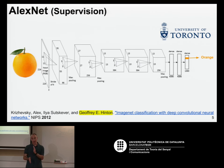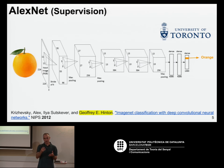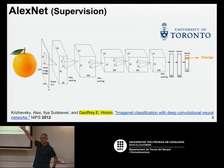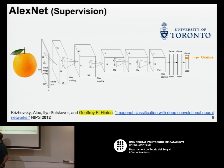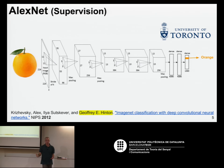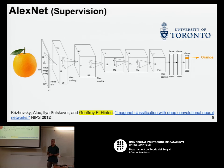In those layers, you have the types of layers that Elisa explained — convolutions, max pooling, and regularizations. This model, apart from being called Supervision, is properly known as AlexNet. The first author is Alex Krizhevsky, who was in Toronto at that time together with Geoffrey Hinton, one of the people who had been working for a long time on neural networks. That was a revolution.